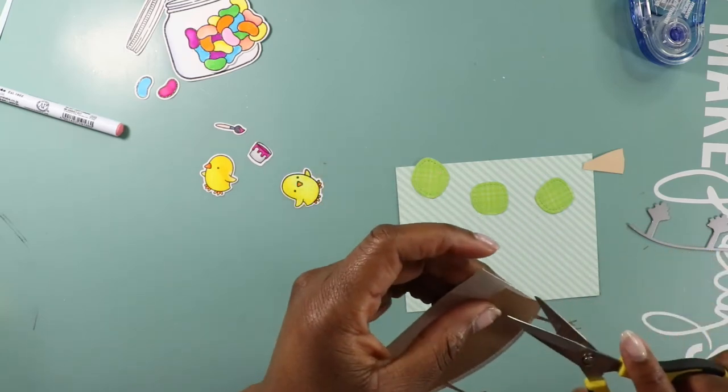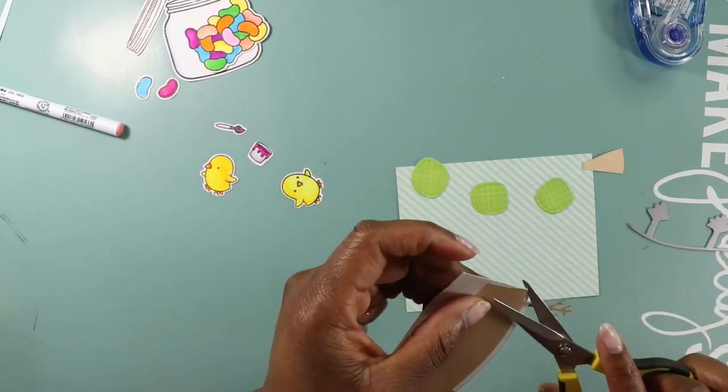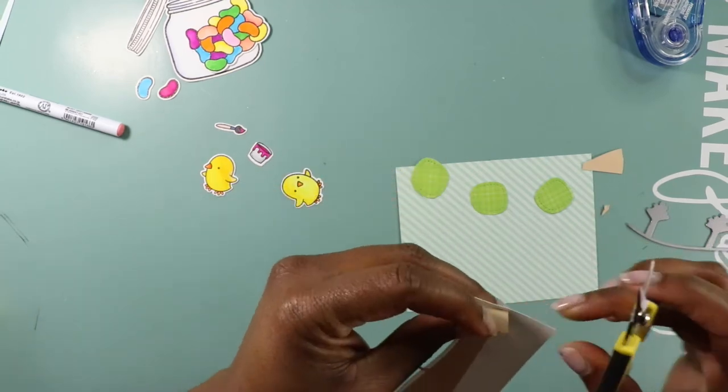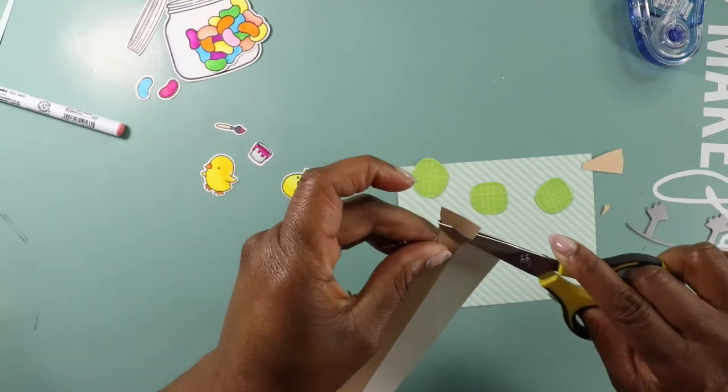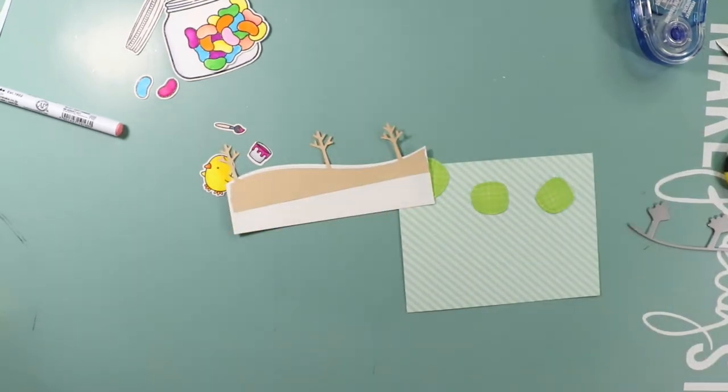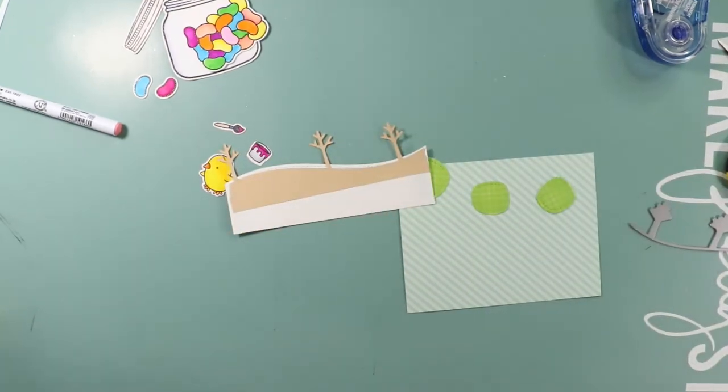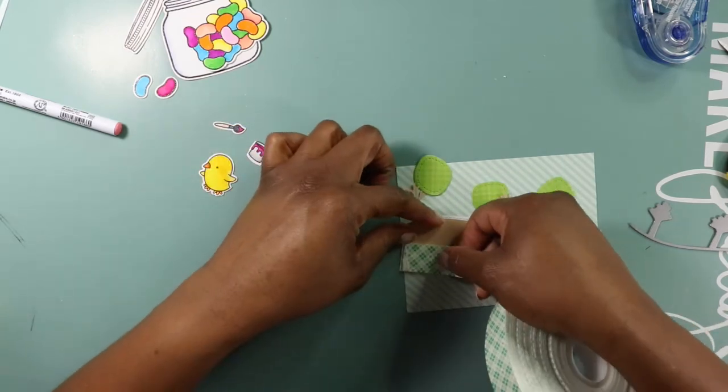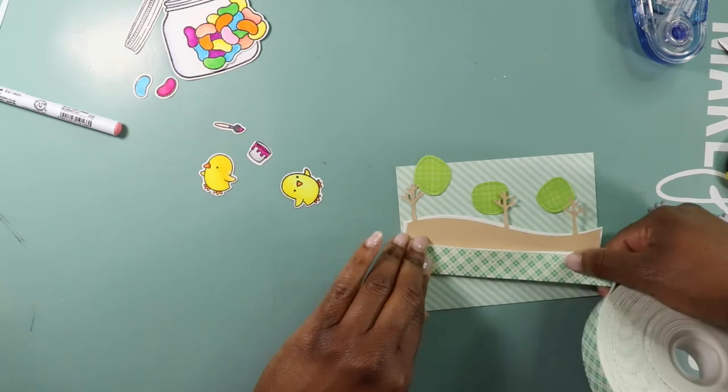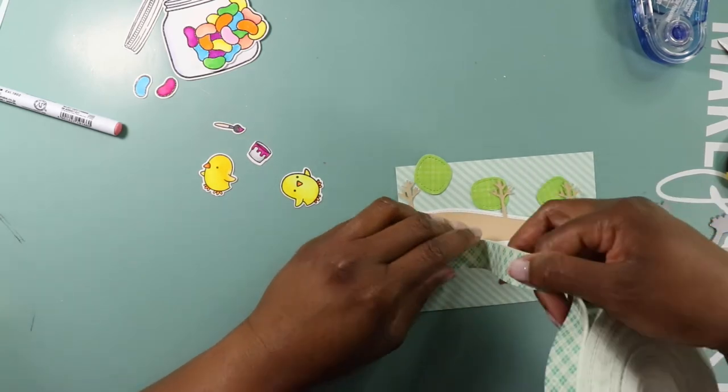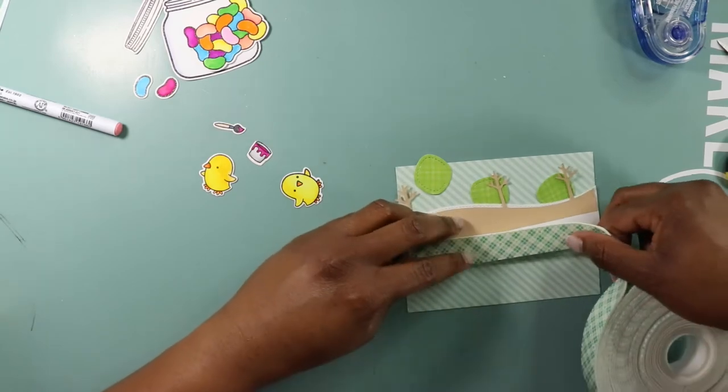As you can see I die cut out that brown paper to make my trees and I just tucked it behind the little hillside border. The cool things about these Lawn Fawn dies is that they kind of make them to coordinate with each other. So it was really easy to match that tree border up with one of the hillside borders.